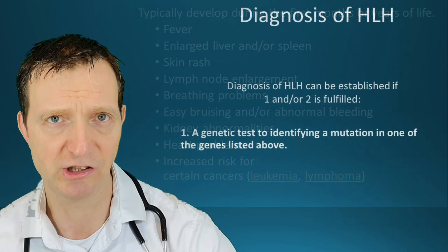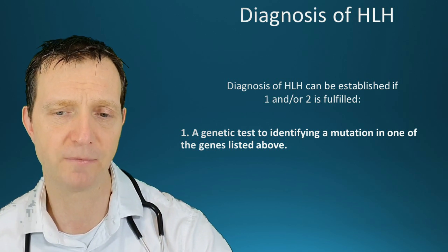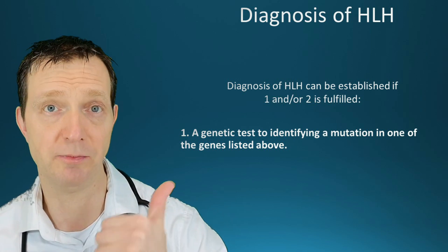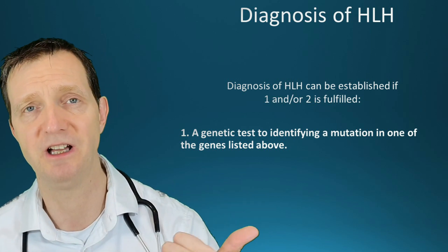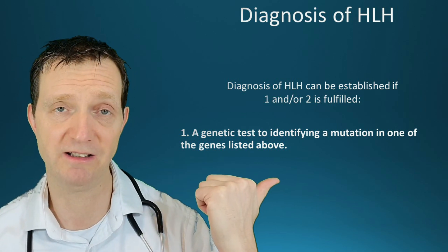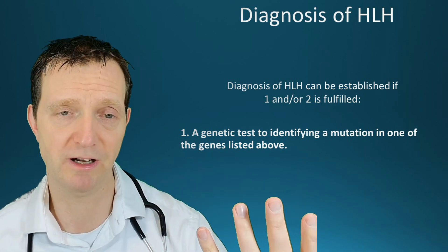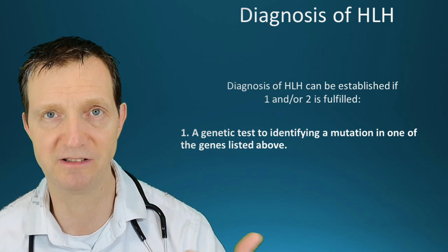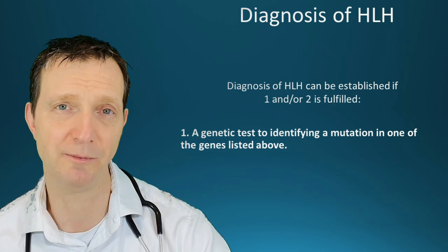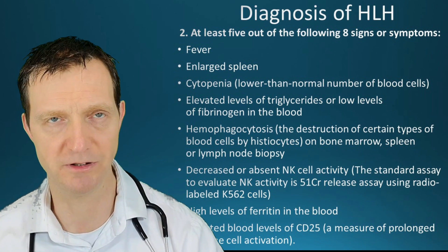So how do you diagnose HLH? Number one, a genetic test can identify a mutation in one of the genes previously identified. If someone has that mutation and they show signs of HLH, then you have your diagnosis. However, if you can't find one of those genes — and those gene tests can't be done at the drop of a hat — then you need five out of the following eight signs and symptoms.